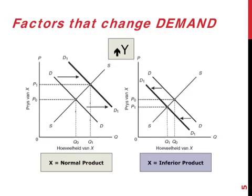In the case of an inferior product, an increase in income leads to a decrease in demand. You buy fewer baked beans when your income goes up at every price. The whole demand curve moves towards the left, and the equilibrium price and equilibrium quantity are both lower.